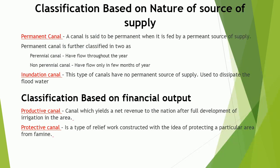Classification based on nature of source of supply: canals can be classified into two types. Permanent canal — a canal is said to be permanent when it is fed by a permanent source of supply. Permanent canals are further classified as: perennial canal, which has flow throughout the year, and non-perennial canal, which has flow only in a few months of the year.